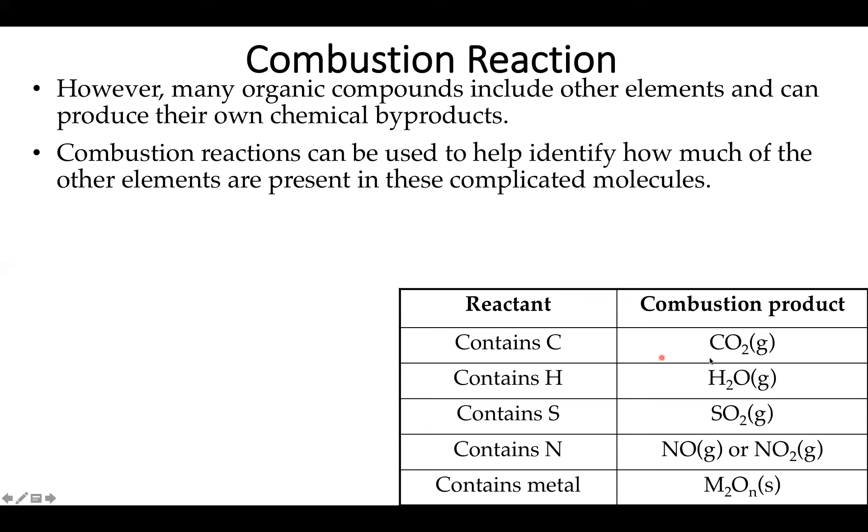Because if I know exactly how much CO2, water, SO2, NO2, or metal oxide I produce, I can figure out how much each of these elements were present in my original sample. We can do this for any number of organic molecules, like a good old, very cool molecule of cysteine.